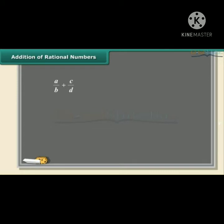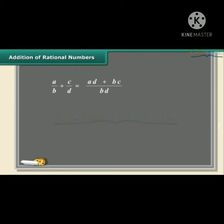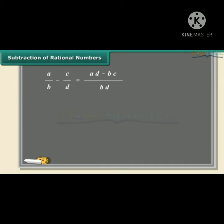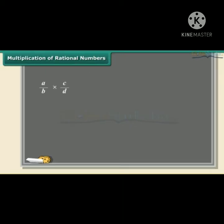How to add rational numbers? It's easy, but before we start, we will check whether they are like rational numbers or not. If not, take the LCM of the denominators, and for the numerator do the cross multiplication and get the result. Similarly, we will do the same for subtraction.